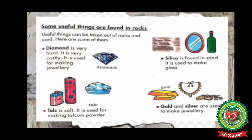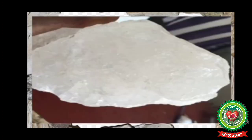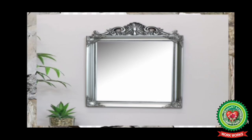The next one is silica. Silica is found in sand and is used to make glass. It is a hard mineral found in nature. You can find silica in desert areas. Look at the picture of silica.